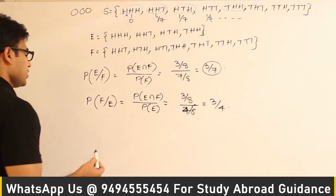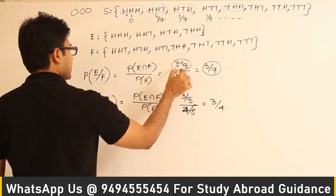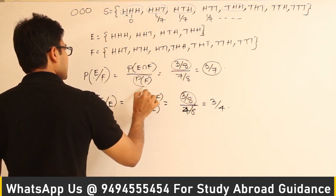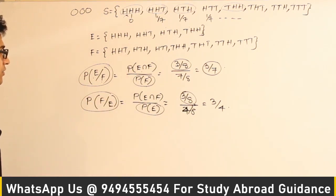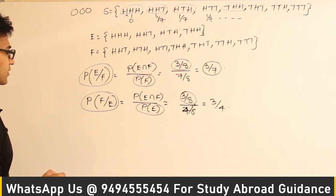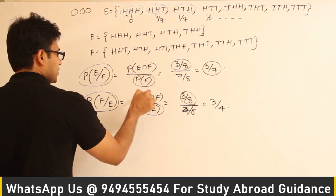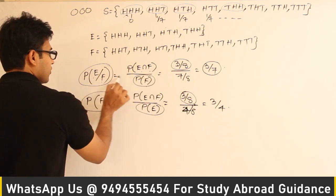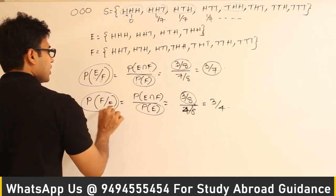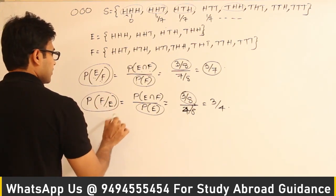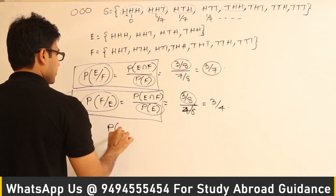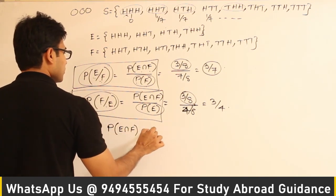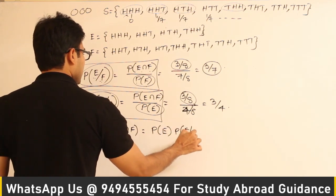One thing to observe: P(E∩F) is common to both calculations. What changes is P(F) and P(E|F) in one case, and P(E) and P(F|E) in the other. From these two formulas we can derive: P(E∩F) = P(F) · P(E|F) = P(E) · P(F|E).